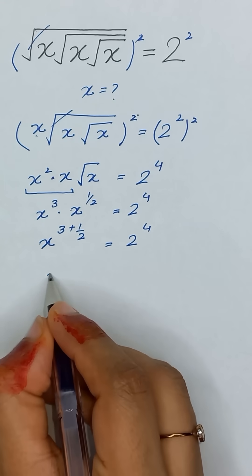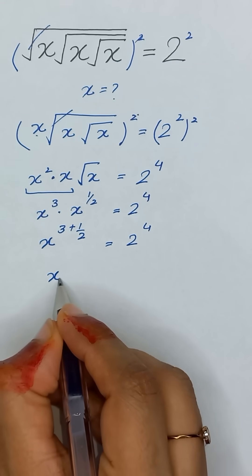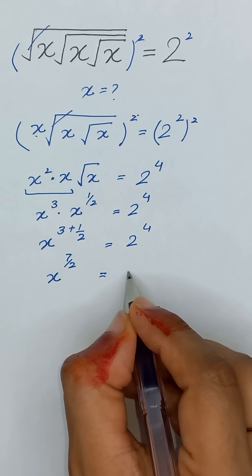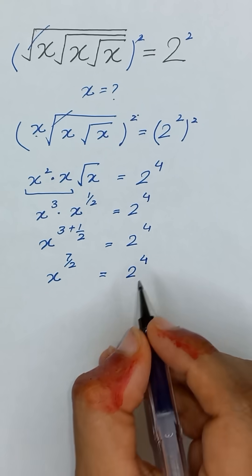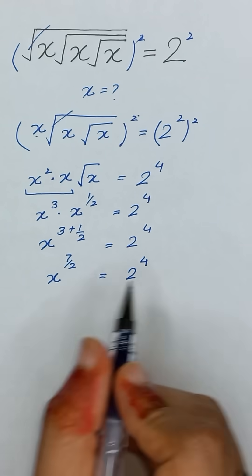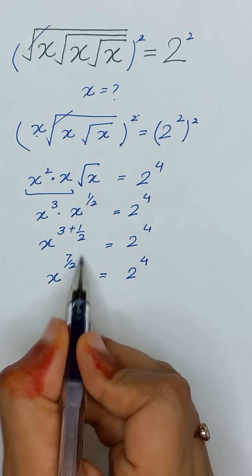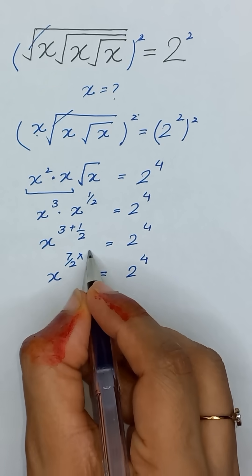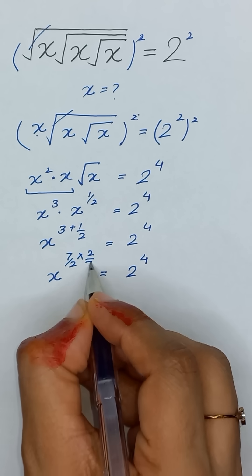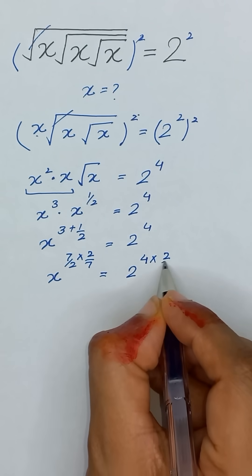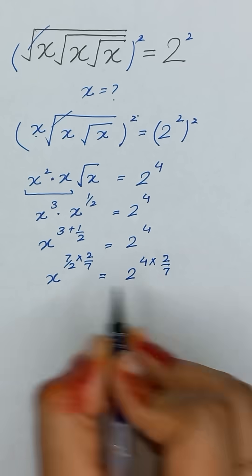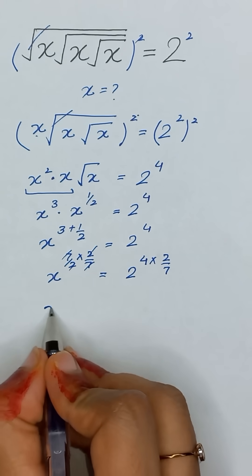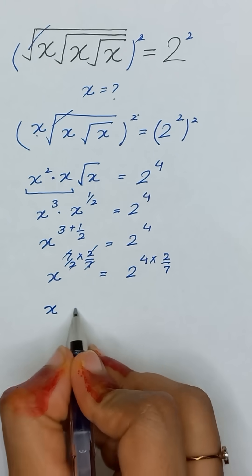So it will become x to the power 3 plus 1 divided by 2, is equal to 2 to the power 4. Now 3 plus 1 divided by 2 gives us 7 divided by 2, so x to the power 7 divided by 2 equals 2 to the power 4. To find the value of x, we will remove this power 7 divided by 2 by multiplying the reciprocal power 2 divided by 7 on both sides, so the 7 and 7, and 2 and 2, will be cancelled out.